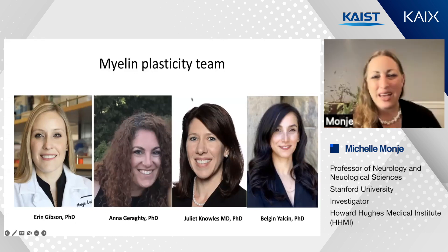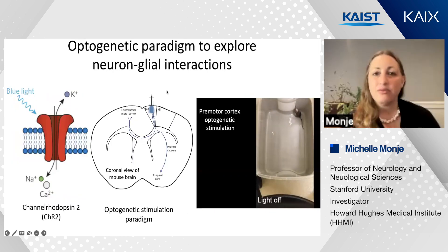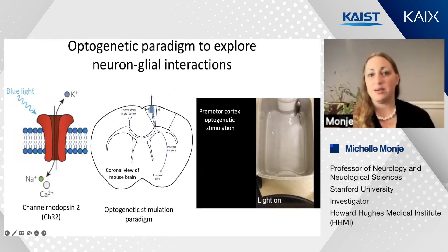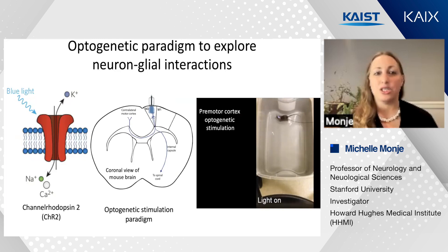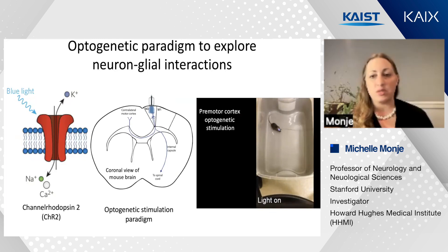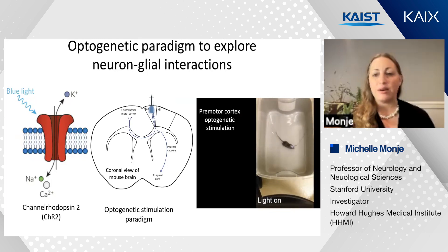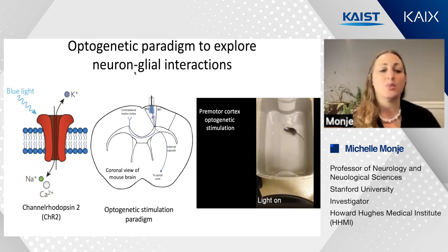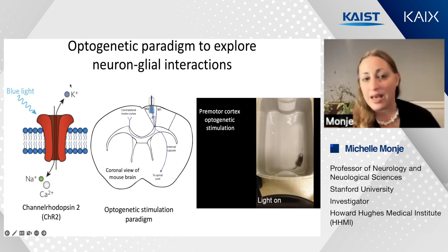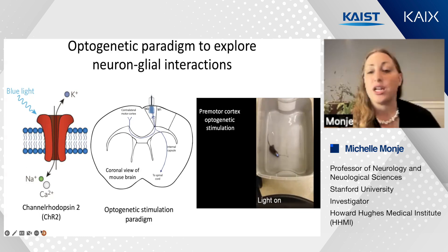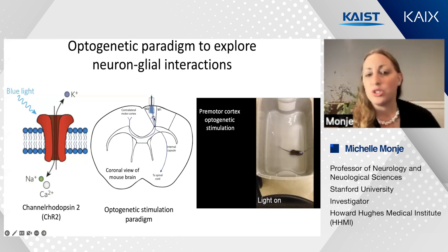What Erin, Anna, Juliet, and Belgen have done is to leverage tools of modern neuroscience to better understand glial biology. One tool we've used a lot is in vivo optogenetics, which allows for control of targeted populations of cells that express light-sensitive ion channels—in this case, the cation channel channelrhodopsin-2—expressed in cortical projection neurons.